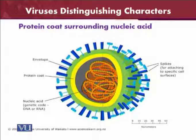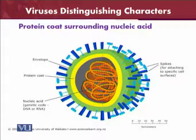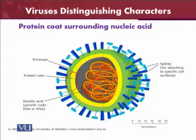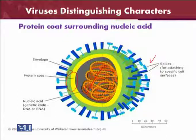Regarding the structure of viruses, they have the simplest structure among all microorganisms. Viruses are composed of only two things: nucleic acid and protein. The protein coat, called a capsid, envelops the entire DNA or RNA material inside. There are also spikes, which are very important because they help the virus adhere to specific structures on the surfaces of other organisms in order to cause disease.